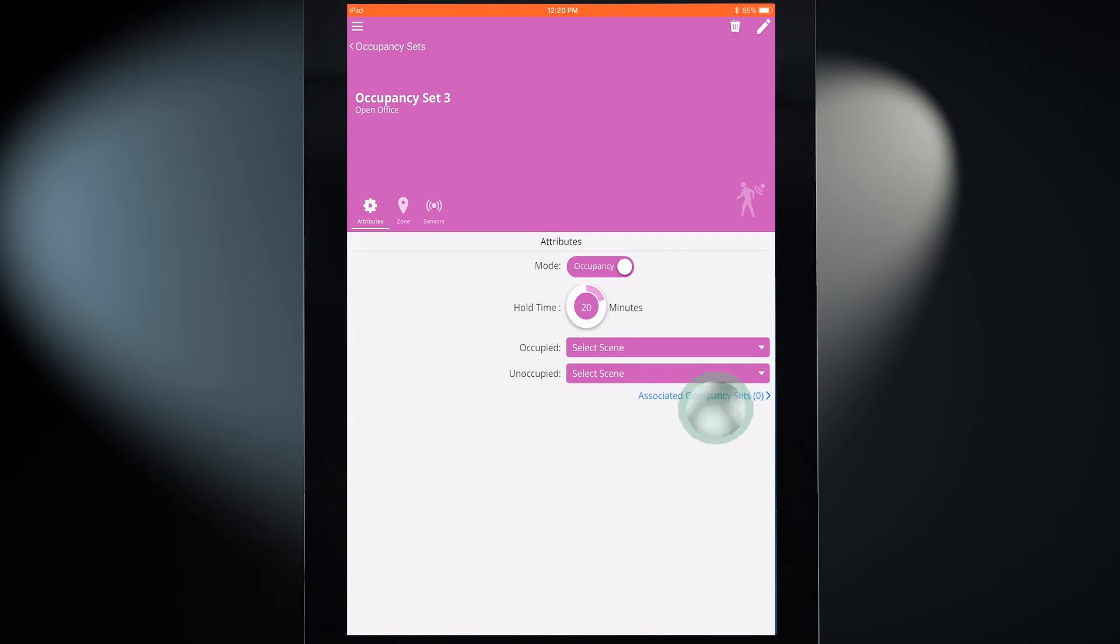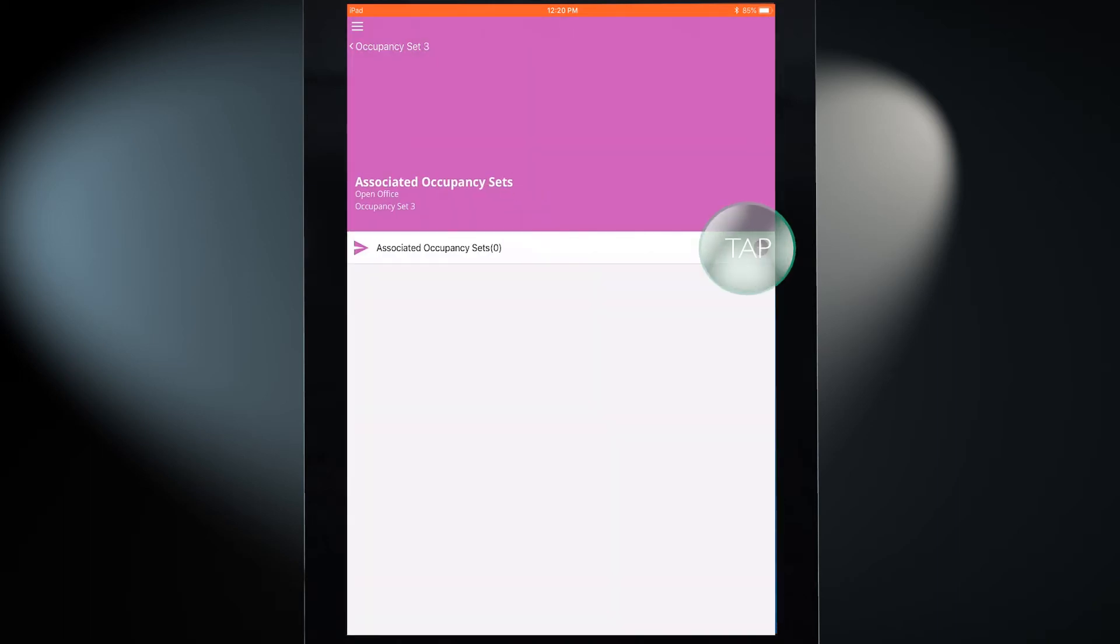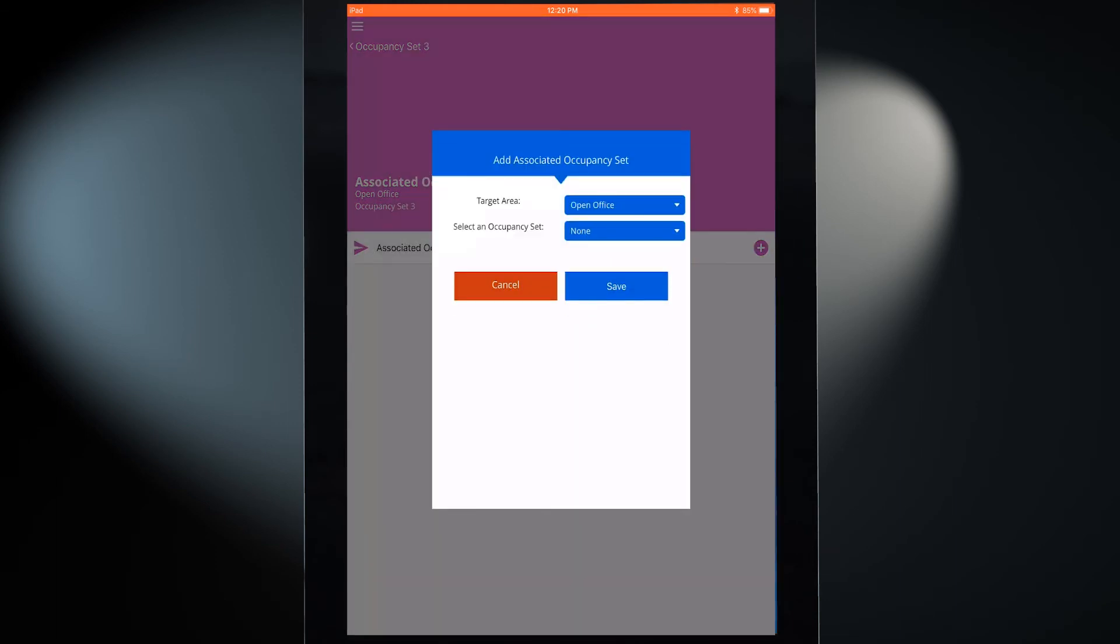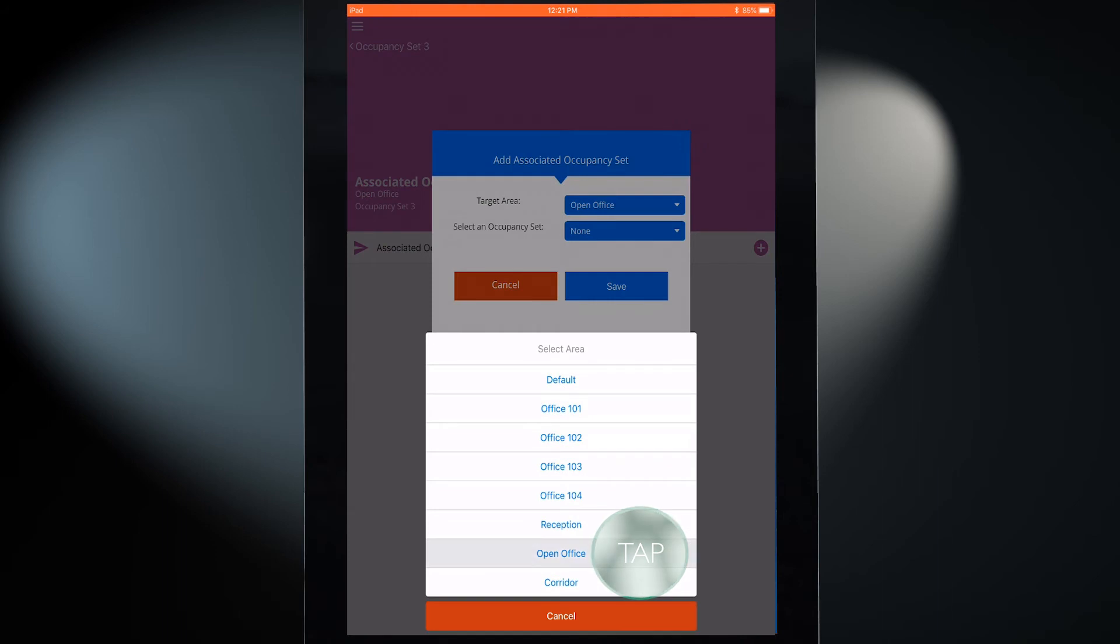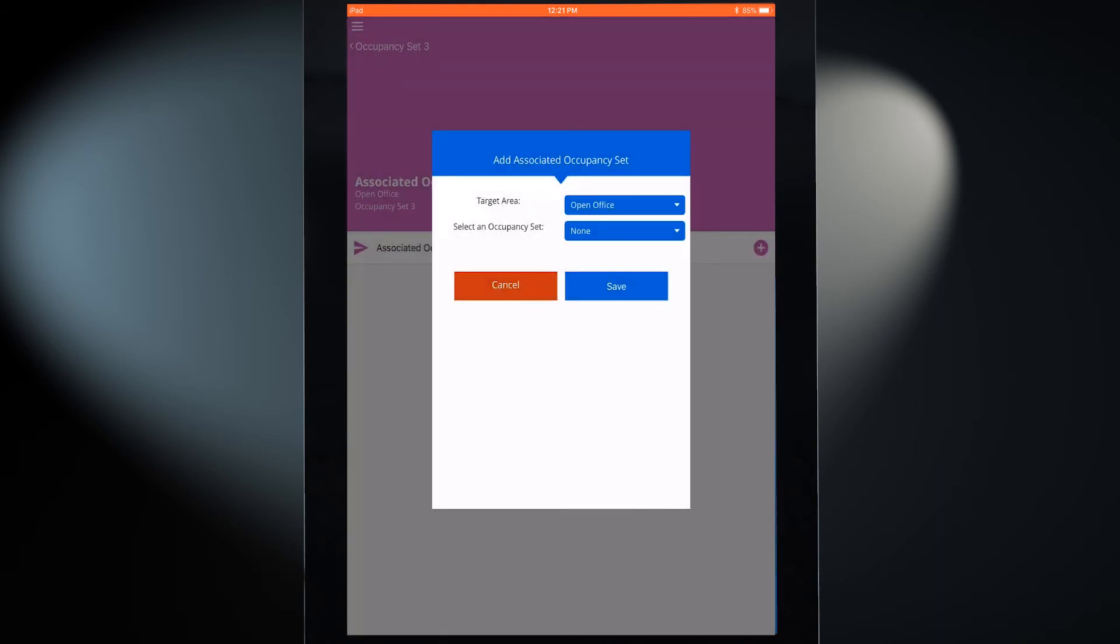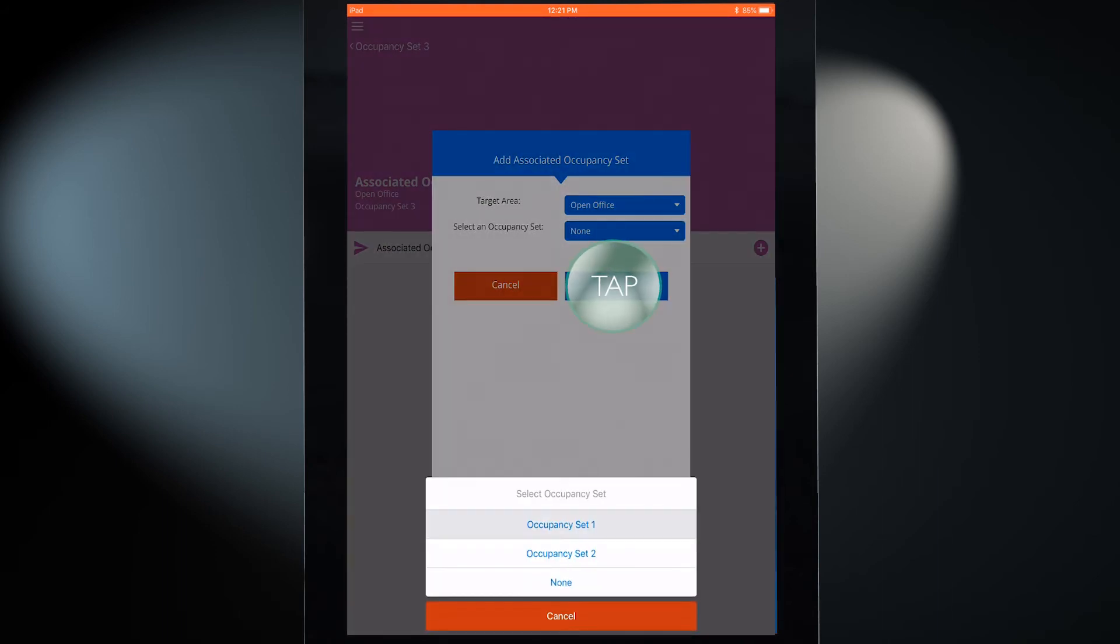In Occupancy Set 3's Attributes page, tap on the Associated Occupancy Sets link. Tap on the plus sign to create the first association. Select the open office area and then choose Occupancy Set 1. Save the new association.